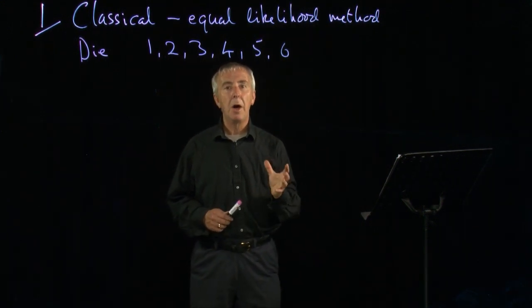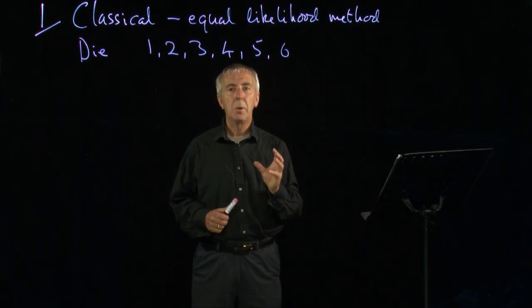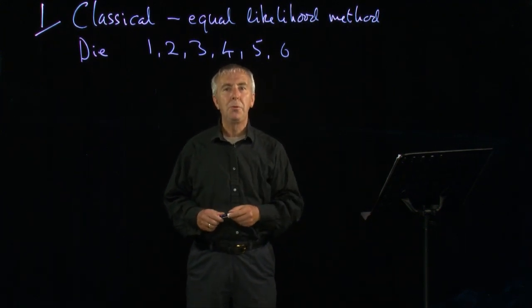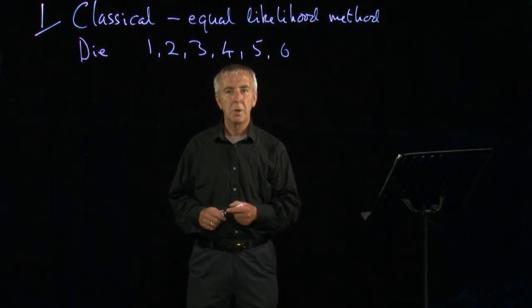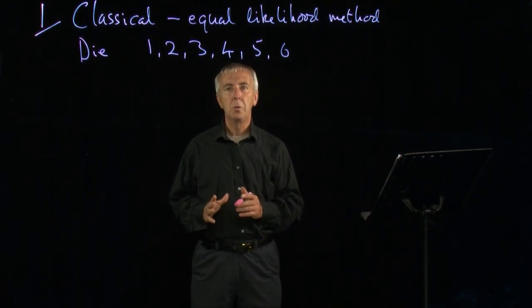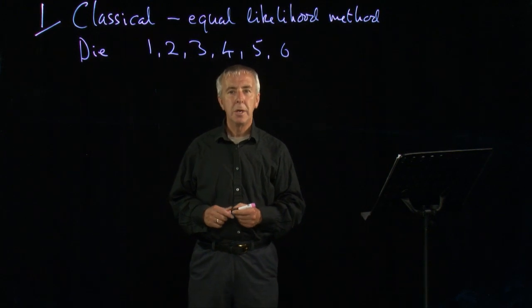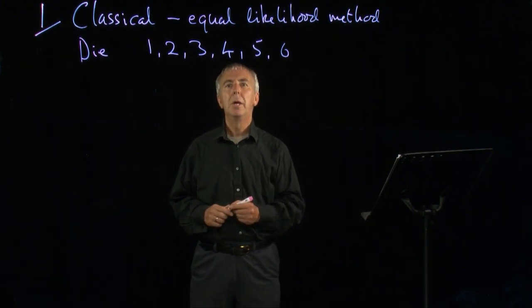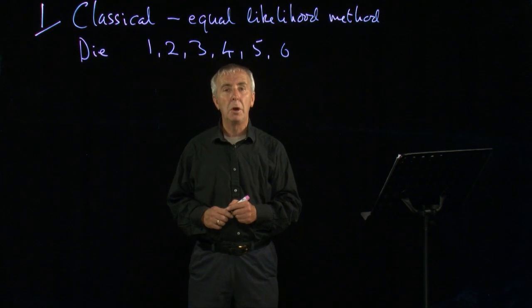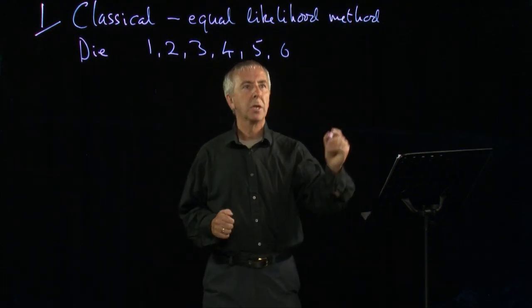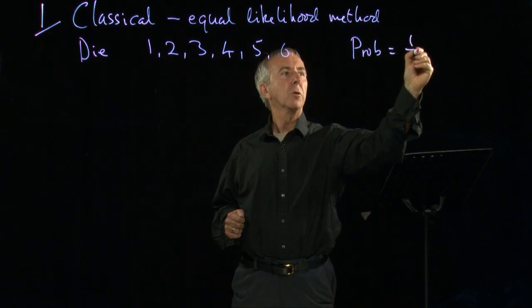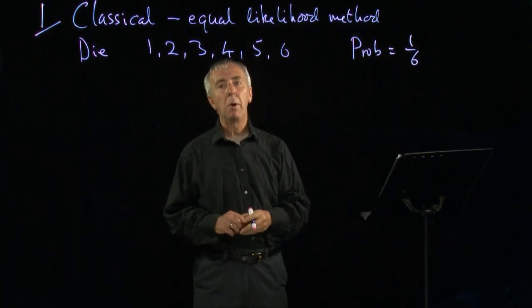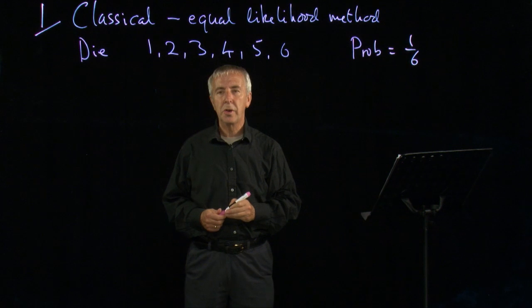Because the die is symmetrical, it's a perfect cube, and we don't worry about little blobs on it that might disrupt it and make it slightly uneven. We assume it's a perfectly normal cube, then each of those numbers is equally likely to come up. And so each one has a probability or the chance of one out of six. So the probability equals one sixth for any one of those items. They've all got the same chance.